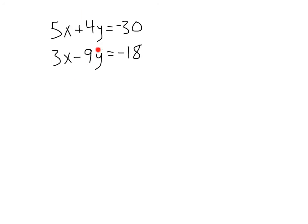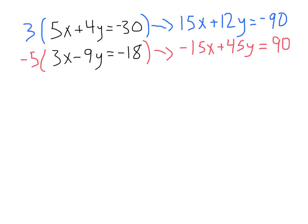Alright, sometimes you're going to have the case where you've got a double dip, and by that, I mean you're going to have to multiply each equation by something in order to cancel out your variable. In this case, we've got 5x plus 4y equals negative 30, and 3x minus 9y equals negative 18. Watch what happens here. We multiply the first equation by 3. That'll give us 15x plus 12y equals negative 90. Second equation, we multiply by negative 5. That's going to give us negative 15x plus 45y, and negative 5 times negative 18 is 90.